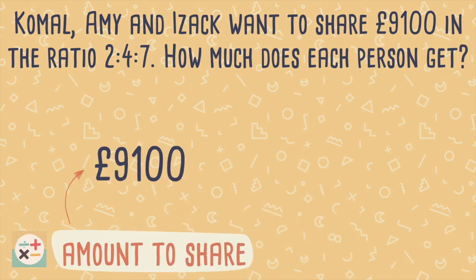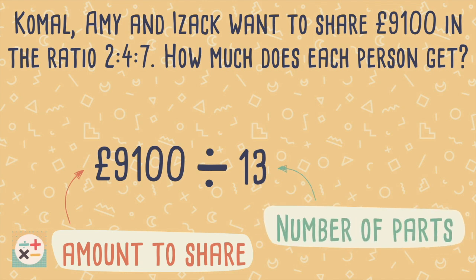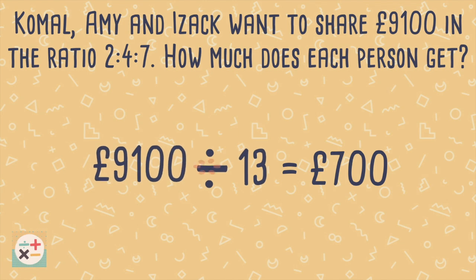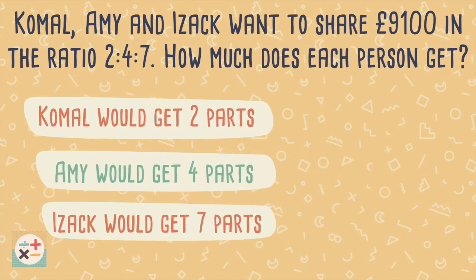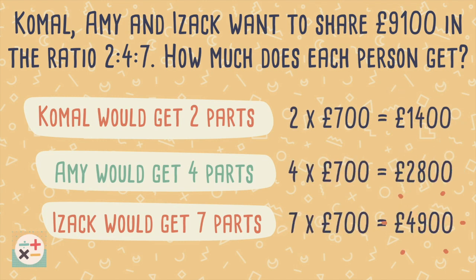Now we can divide the amount we need to share by the number of parts. Now we know what one part equals, we can share out these parts using the ratio. We can check that this is correct by adding up the individual amounts — they should equal the original amount we have to share.